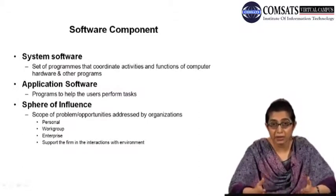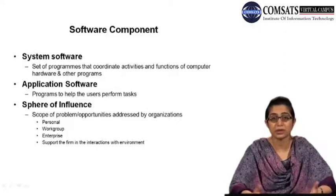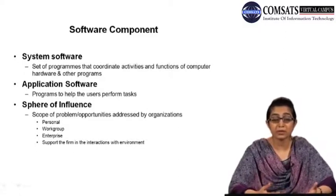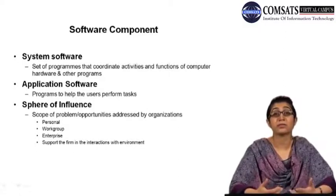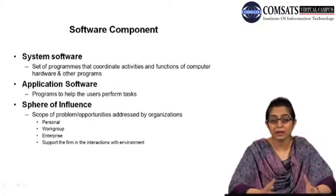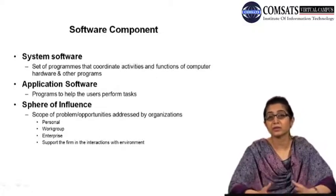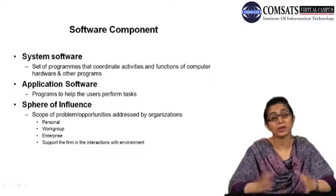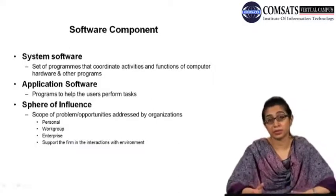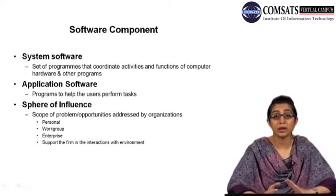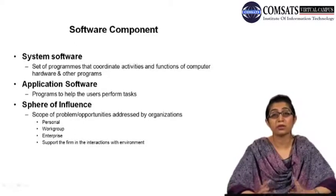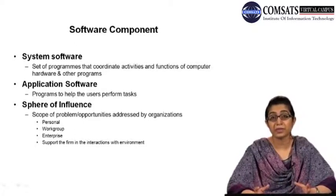There are two basic kinds of software. System software is a set of programs that coordinate activities and functions of the computer system, which includes the hardware as well as other programs. System software is basically used for controlling, coordinating, and maintaining the computer system.